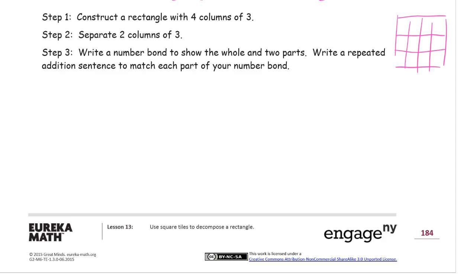And separate 2 columns of 3. So you're going to separate 2 of these here. And then you're going to do the same thing we did for problem 1, except now we've got different whole and different parts. So the whole thing is 4 columns of 3. And there it is. It's spelled right there. So you should be able to get the word column spelled correctly. 4 columns of 3. That's your whole.